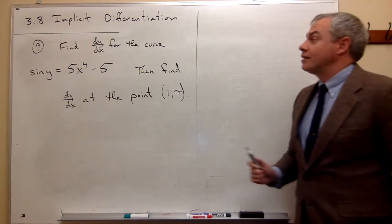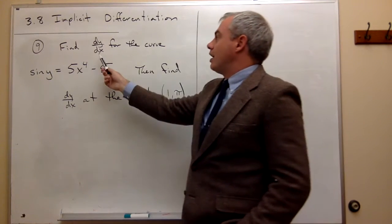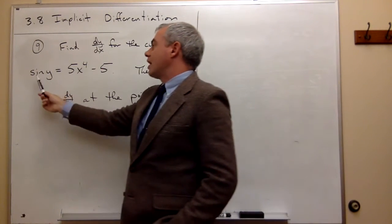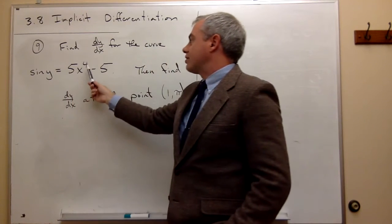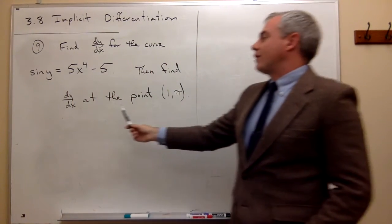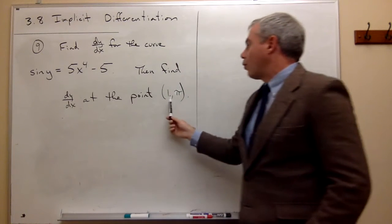Now let's look at problem number 9. In number 9, I want to find dy/dx for the curve sine of y equals 5x to the fourth minus 5, and then we want to find dy/dx at the point (1, π).